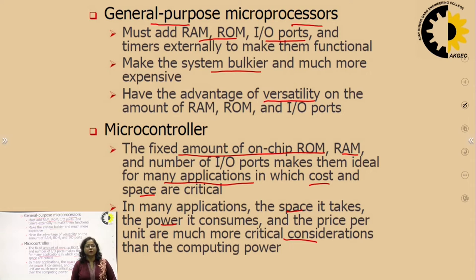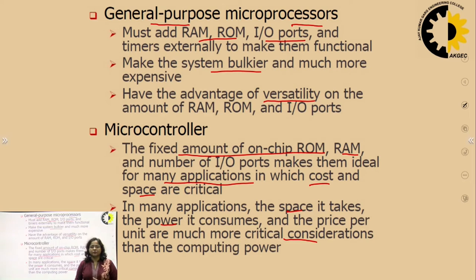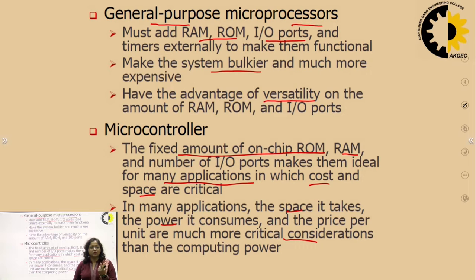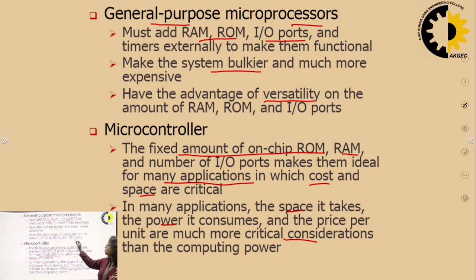Space, power consumption, and cost of hardware — i.e., price per unit — are much more important than the range of applications. For example, if we have to design a controller for a washing machine, it should be of smaller size, less cost, and consume lesser power. So it should be designed using a microcontroller, because it has only a single purpose: to control the working of the washing machine, and no versatility is required.